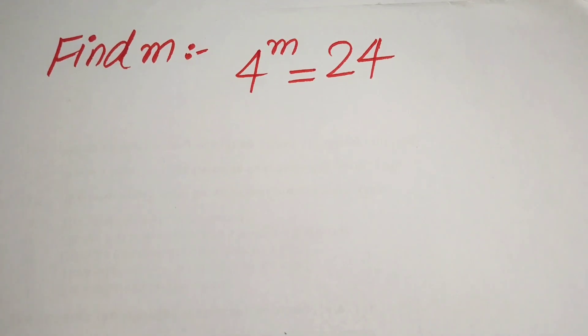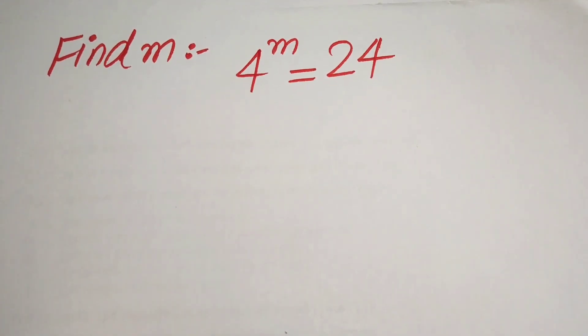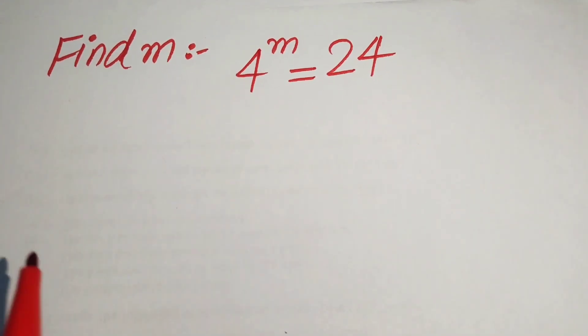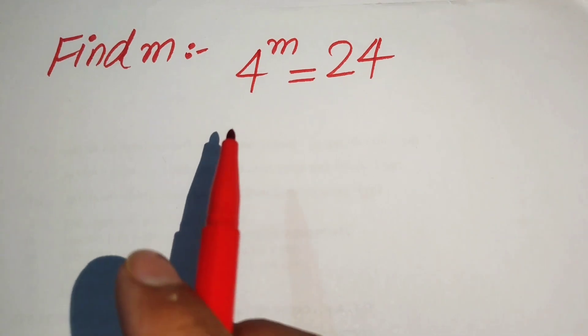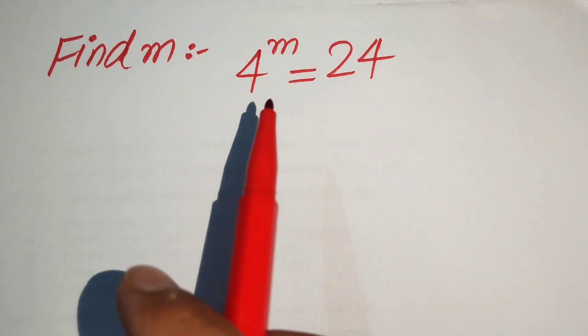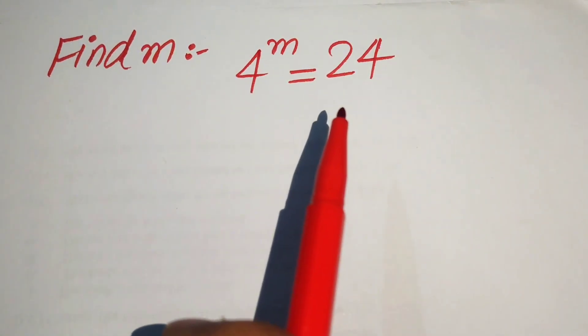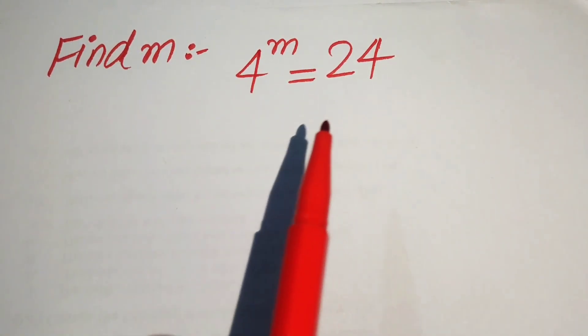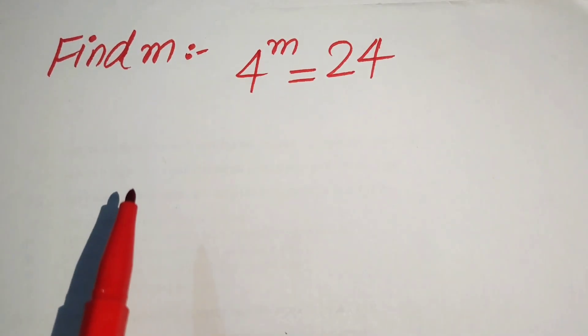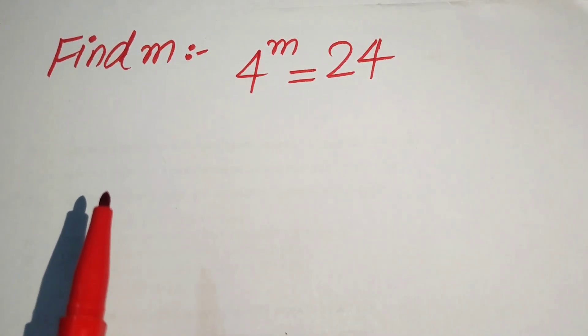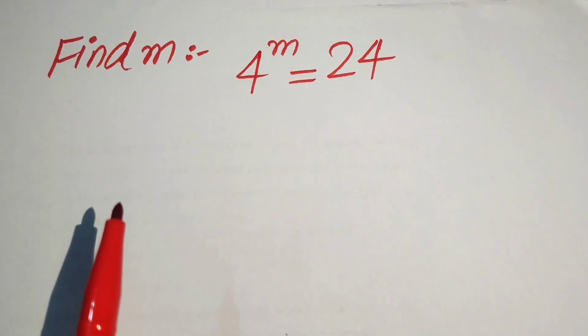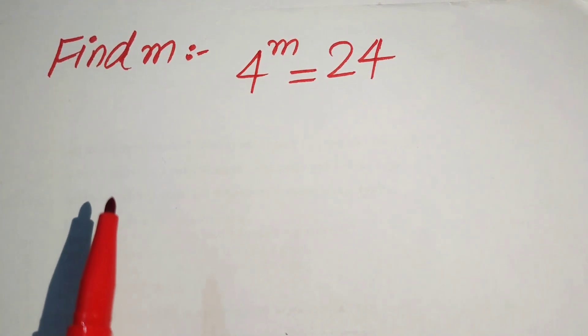Hello everyone, welcome. We will solve this Math Olympiad exponential equation problem. Here we have 4 to the power of m equals 24, and we solve this problem for the value of m.